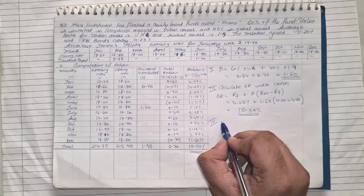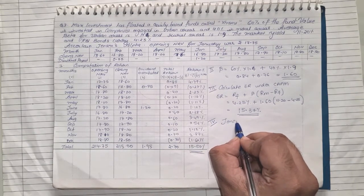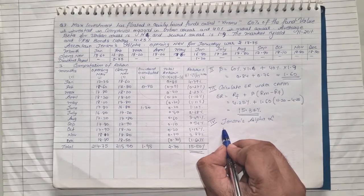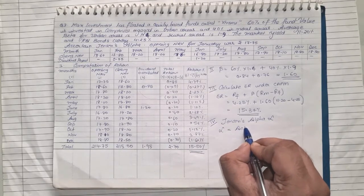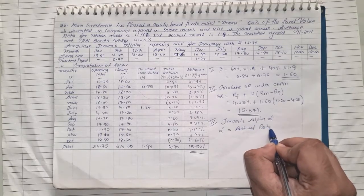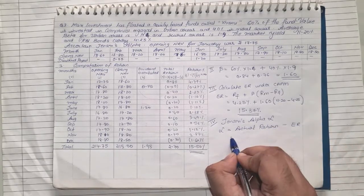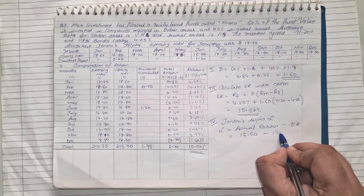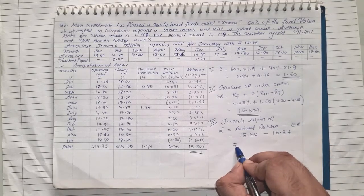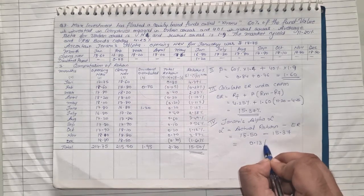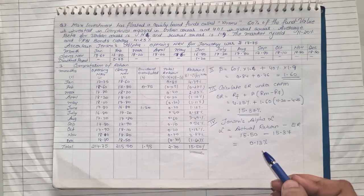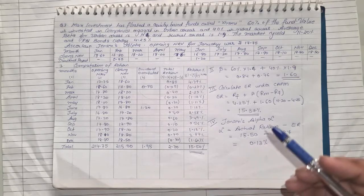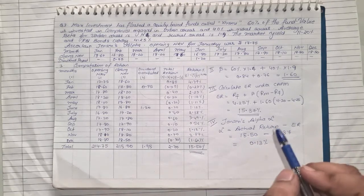Step number 4, last step, and there we are finding Jensen's alpha. Formula very simple: alpha is equal to actual return less expected return. Actual return is 15.50 which you already found, less expected return that we recently found. The difference of that is nothing but our value of alpha. Since alpha is positive we can conclude that this particular security has outperformed in the market.